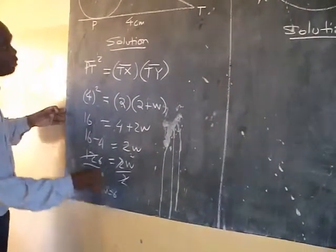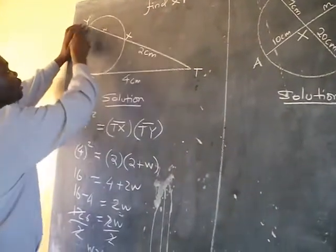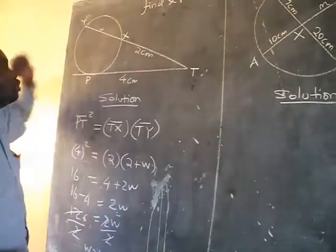So w equals 6. But when you see where w is, it is where the length x, y is. And that is what we are asking.